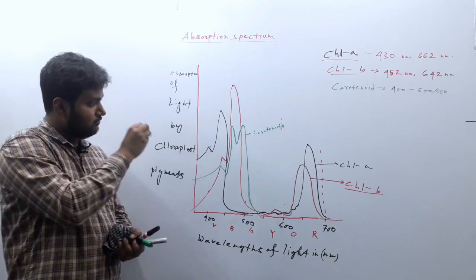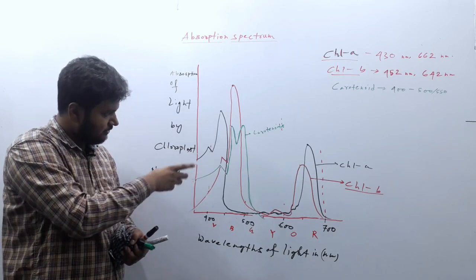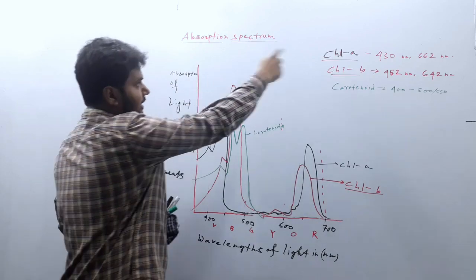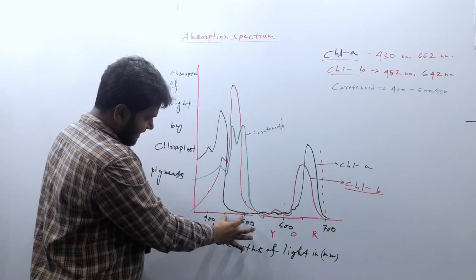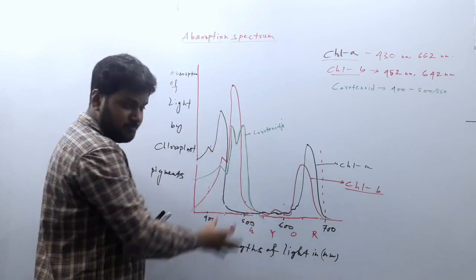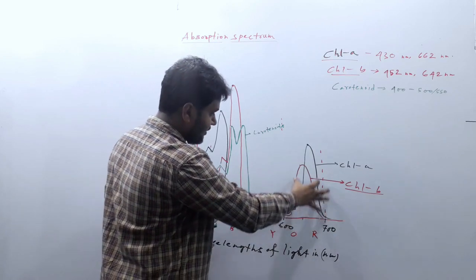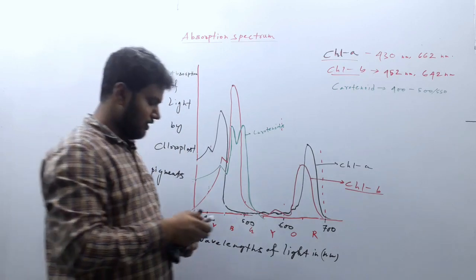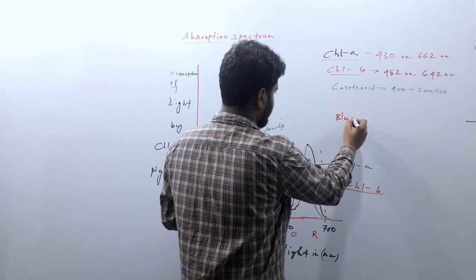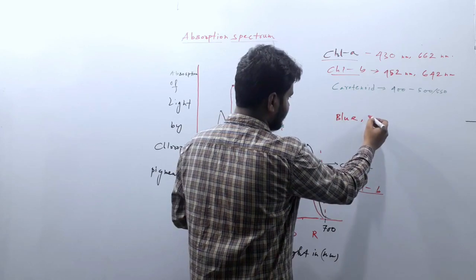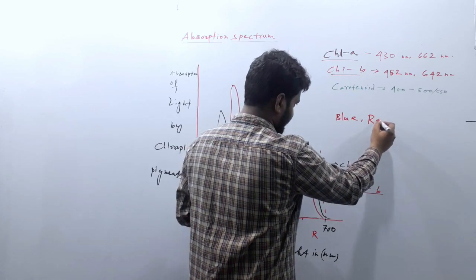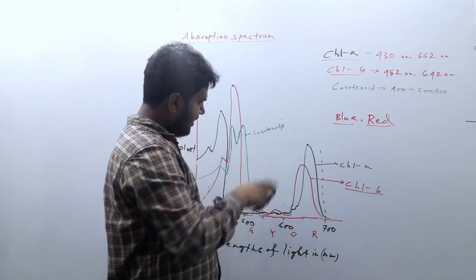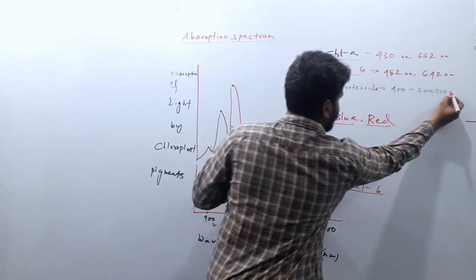Now, combining all the pigments, in which region is absorption maximum? You can see in this blue region light absorption is maximum, and also in this red region. So two regions are very important for photosynthesis — two colors: one is red, another one is blue. The most important is blue and next is red. So blue and red light are maximally absorbed for photosynthesis.